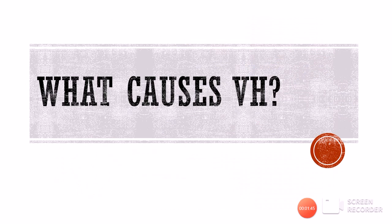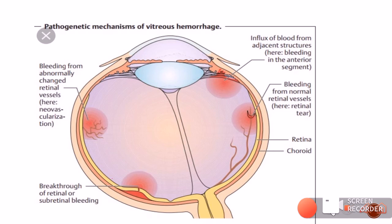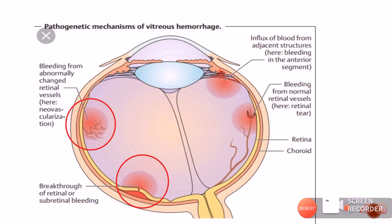The normal vitreous cavity is free of blood vessels, and normal retinal blood vessels do not usually bleed into the vitreous cavity. However, there are several reasons that can cause vitreous hemorrhage. The first is bleeding from an abnormally changed retinal vessel — for example, new vascularization, which consists of abnormal new vessels occurring in the setting of retinal ischemia.